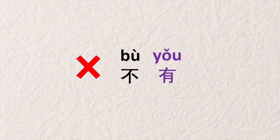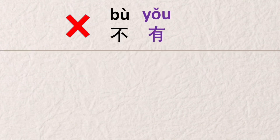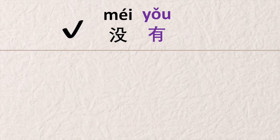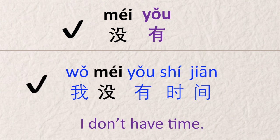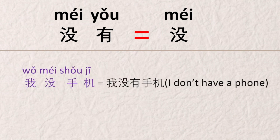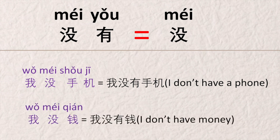Almost all verbs can be negated with 不, unless you are talking about the past. The only verb that can never be negated with 不 is 有 — we never place 不 before 有. So how do we make a sentence like 'I don't have time'? We don't say 我不有时间. Instead, we must use 没 to negate the verb 有: 没有. For example, 我没有时间 — I don't have time. The short form of 没有 is 没: 我没手机, same as 我没有手机, I don't have a phone. 我没钱 / 我没有钱 — I don't have money.